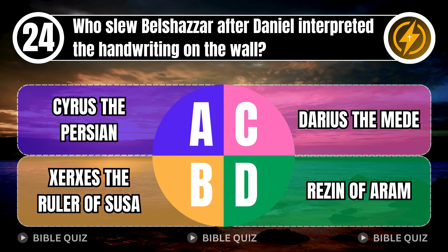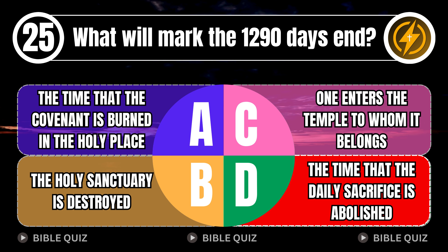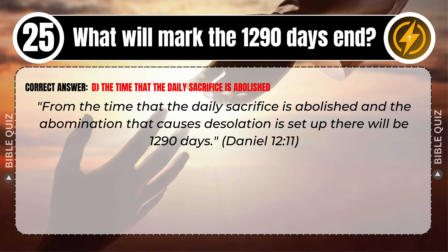Question 25: What will mark the 1290 days' end? A. The time that the covenant is burned in the holy place. B. The holy sanctuary is destroyed. C. One enters the temple to whom it belongs. D. The time that the daily sacrifice is abolished. Correct answer: D. The time that the daily sacrifice is abolished. From the time that the daily sacrifice is abolished and the abomination that causes desolation is set up, there will be 1290 days. Daniel 12 verse 11.